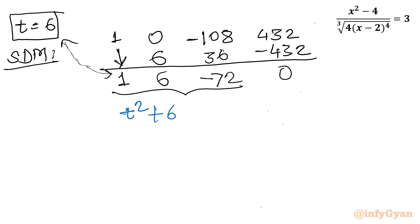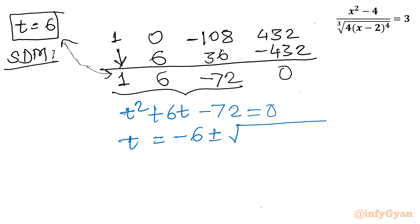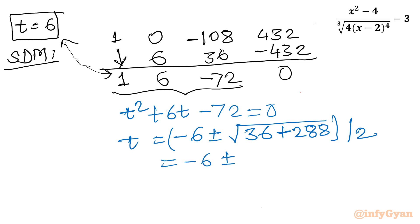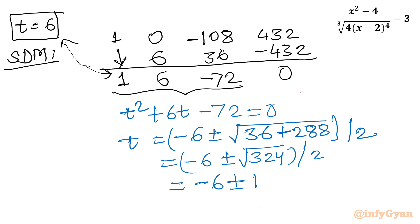The quadratic equation in t is t² + 6t - 72 = 0. Using the quadratic formula: t = (-6 ± √(36 + 288)) / 2 = (-6 ± √324) / 2 = (-6 ± 18) / 2. Taking the plus sign: 12/2 = 6. Taking the minus sign: -24/2 = -12.